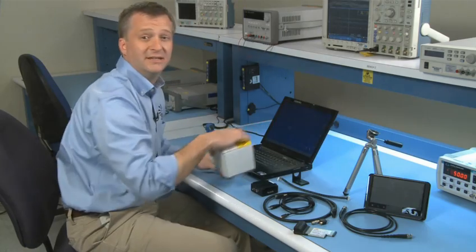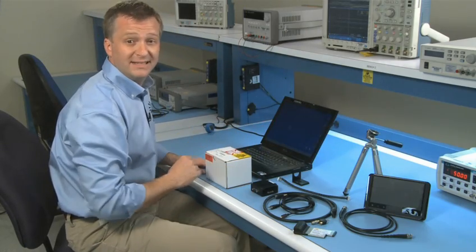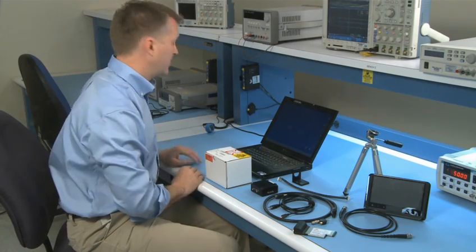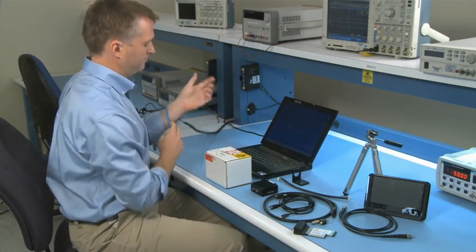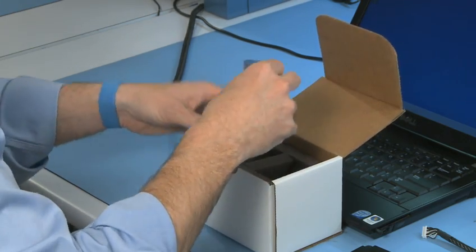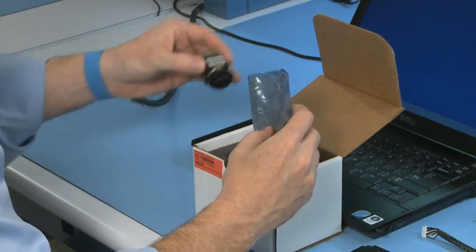Let's open the box and get started. But first, let's follow proper ESD procedures and put on our grounded wrist strap. The camera is packed in a static shielded bag. So open the bag and take out the camera.